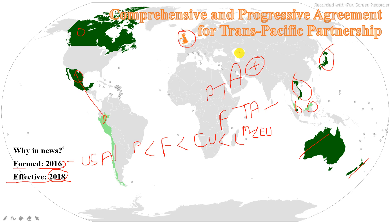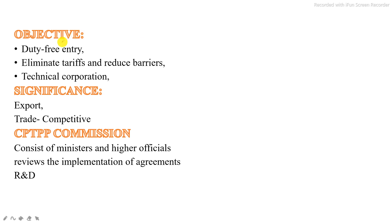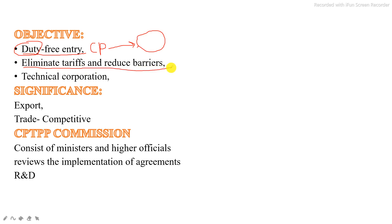Now we will talk about the objectives and significance of this trade agreement. The first objective is to provide duty-free entry of commercial samples having almost negligible value. Between the CPTPP member countries, trade will be duty-free, or only a negligible value will be charged as duty. The second objective is to eliminate tariffs and reduce barriers for 98% of exports among the CPTPP member countries.